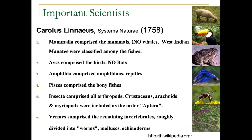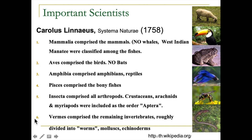Linnaeus separated animals into six groups. The first is Mammalia — though at that time whales and manatees were placed with fish, not mammals. The second is birds, not including bats. The third is Amphibia. The fourth is fish. The fifth includes mostly insects and other arthropods — crustaceans like shrimp and crabs, arachnids like spiders, and myriapods like centipedes and millipedes. The sixth group contained worms — Linnaeus grouped all worm-like animals together, including nematodes, flatworms, annelids, and also some mollusks and echinoderms.